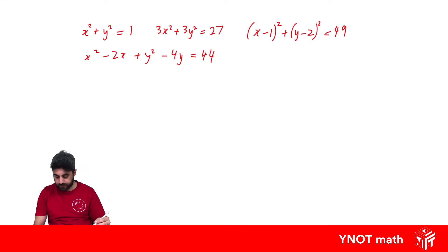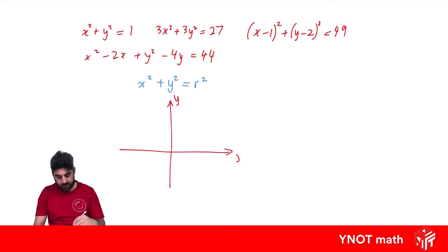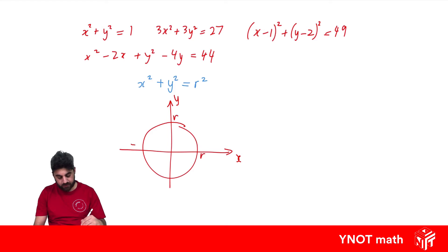Let's look at some basic examples, starting with x squared plus y squared equals r squared. This is the basic equation for a circle centered at the origin with a radius of r, so the circle passes through the points r, r, minus r, and minus r.